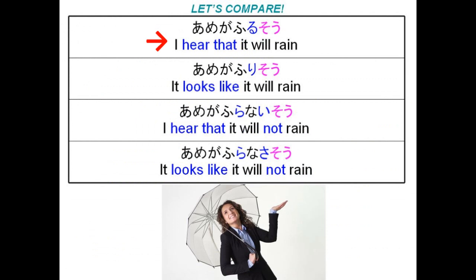Let's compare. Ame ga furusou — I hear that it will rain. This is something I would say if, for example, someone else told me it's going to rain. Ame ga furisou — it looks like it will rain — for instance if I were to look out the window and saw big dark heavy storm clouds gathering. Ame ga furanaisou — I hear that it will not rain — if someone told me it's not going to rain. Ame ga furanaisasou — it looks like it will not rain — if I stepped outside and saw clear bright sunny skies.